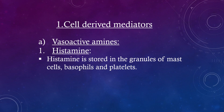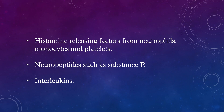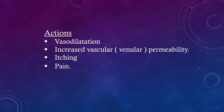Cell-derived mediators — vasoactive amines. First: Histamine. Histamine is stored in the granules of mast cells, basophils, and platelets. It is released by stimuli inducing acute inflammation such as heat, cold, irritation, trauma, irritant chemicals, etc., as well as anaphylatoxin-like fragments of complement C3a and C5a, histamine-releasing factors from neutrophils, monocytes and platelets, and neuropeptides such as substance P and interleukins. Actions: vasodilatation, increased vascular permeability, itching, and pain.